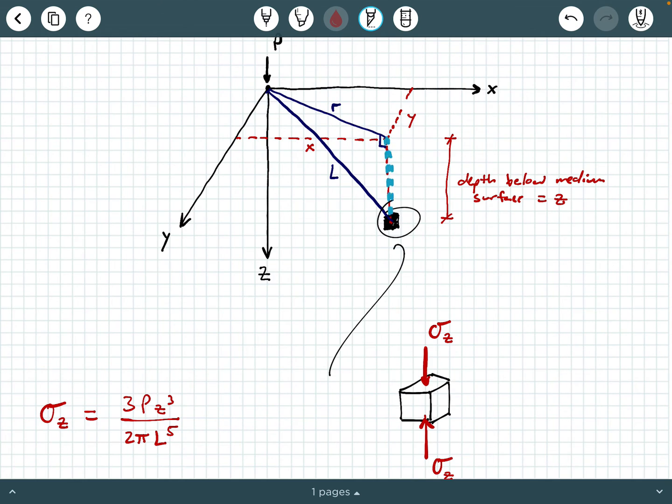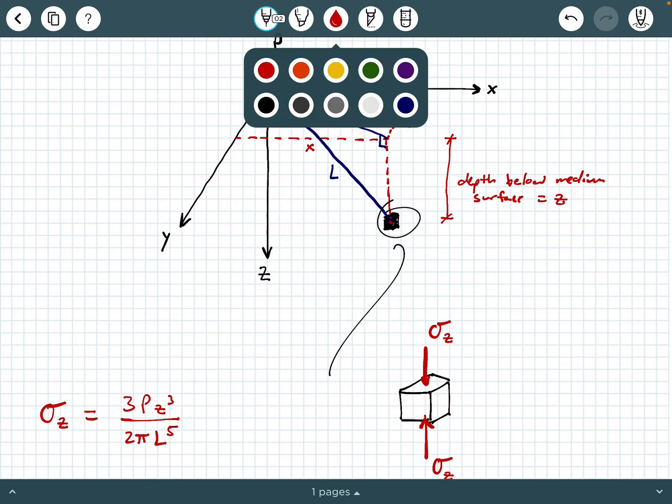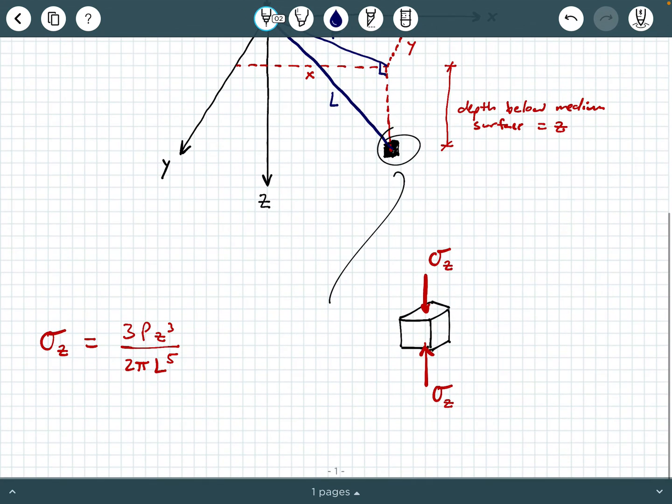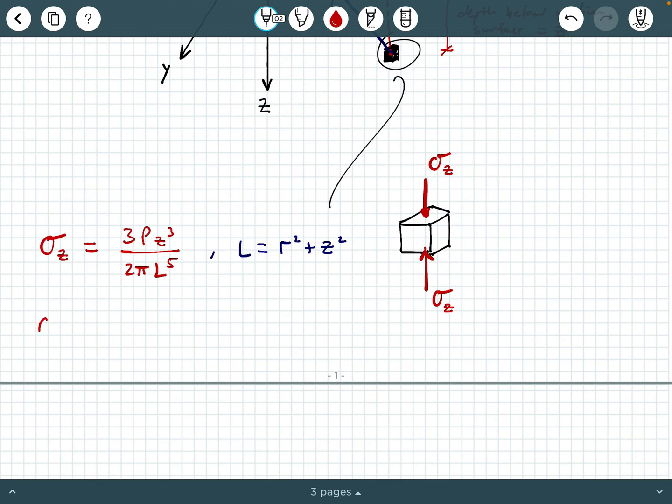That we're looking at for where the location of that point is. So basically, just using this right triangle right here, we can further say that L is equal to r squared plus z squared. And so because of that, we can rewrite our governing equation as sigma z equals 3p z cubed all over 2 pi times r squared plus z squared raised to the 5 halves power.